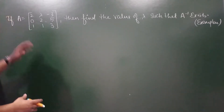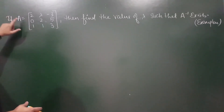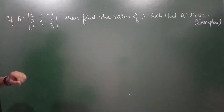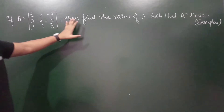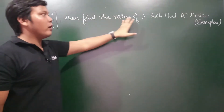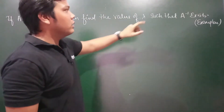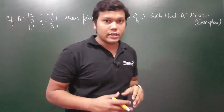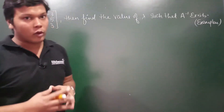Let's see an example. If A equals a 3 by 3 matrix है हमारे पास, then we have to find the value of lambda such that A inverse exists.